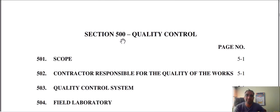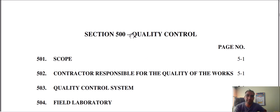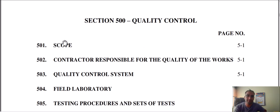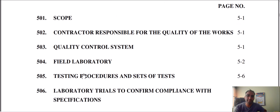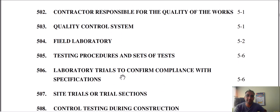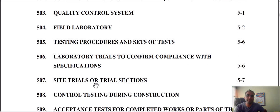The quality control aspect of this document is clear. The scope covers the contractor's responsibility for the quality of work, which is the quality control system. This includes the field laboratory testing process and the set of testing tests, as well as laboratory testing to confirm compliance with the specification.